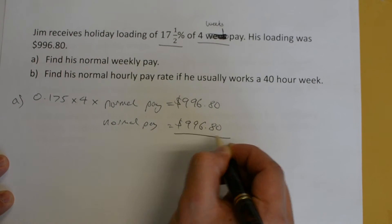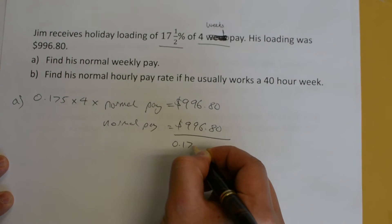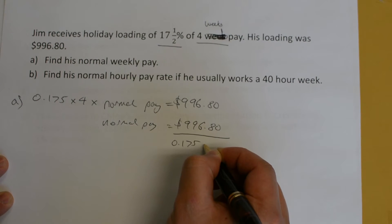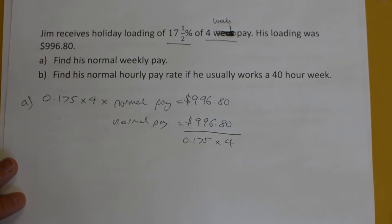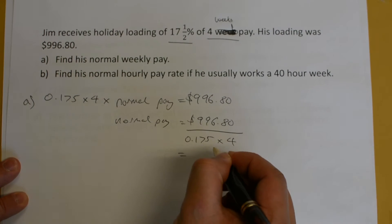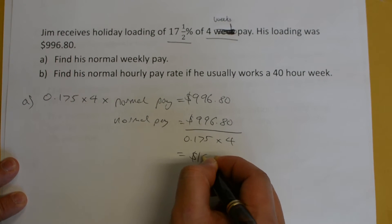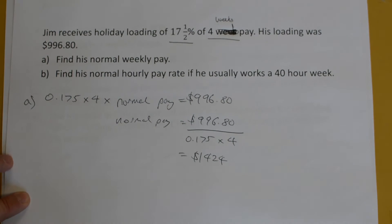His normal pay would be $996.80, and you would divide by your percentage, 17.5%, and you would also divide by your number of weeks, which is four. Putting this in the calculator, you should get $1,424. So this would be his normal weekly pay.